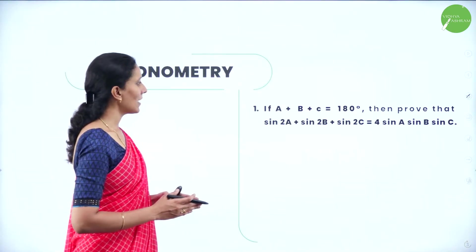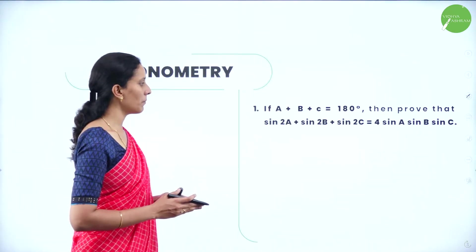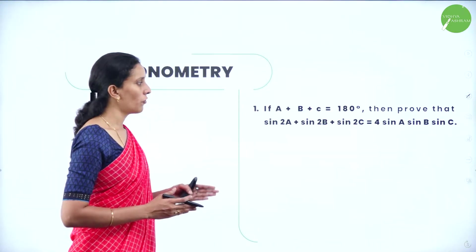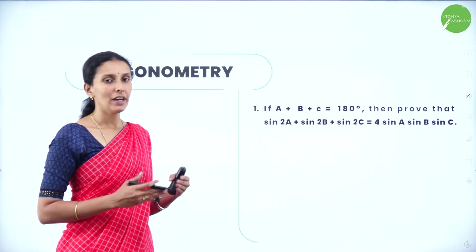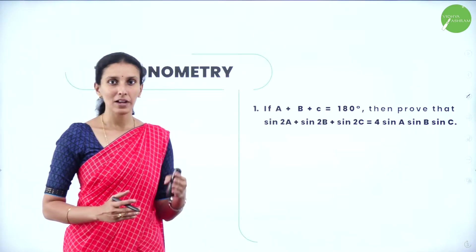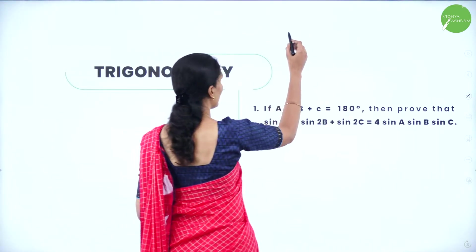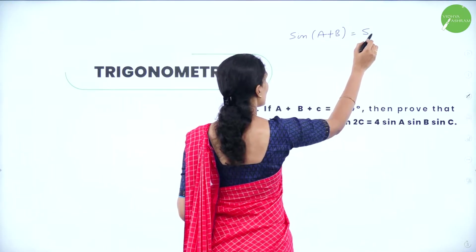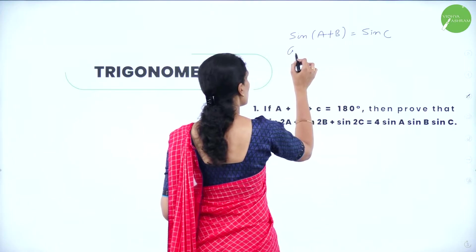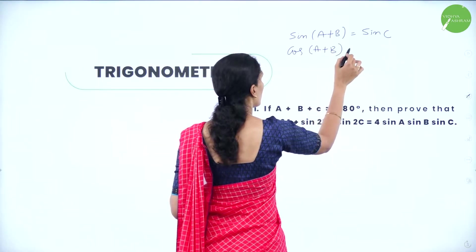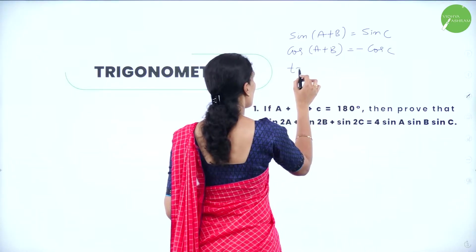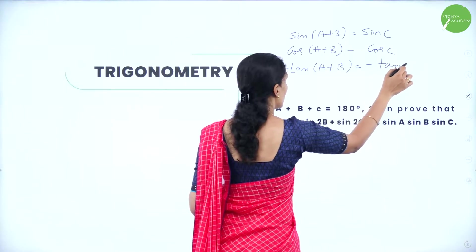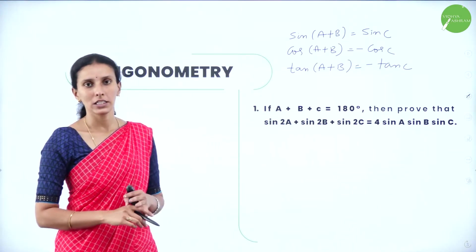The very first question: if A + B + C = 180°, prove that sin2A + sin2B + sin2C = 4sinA·sinB·sinC. Whenever A + B + C = 180° is given, we use three conditions: sin(A+B) = sinC, cos(A+B) = −cosC, and tan(A+B) = −tanC. These apply when A, B, C are angles of a triangle.